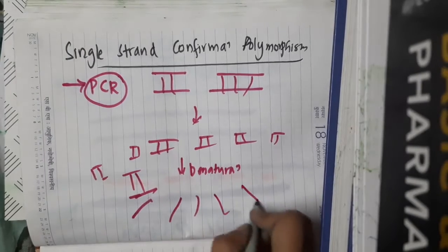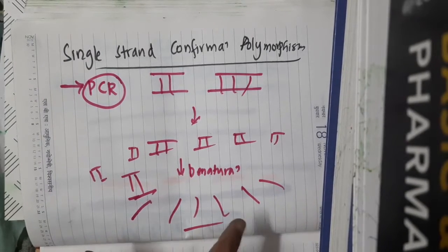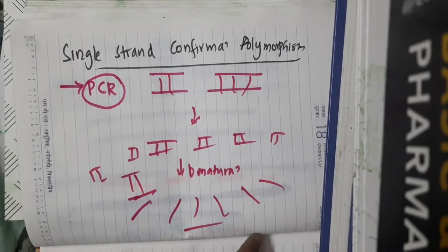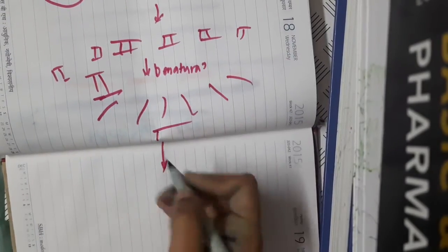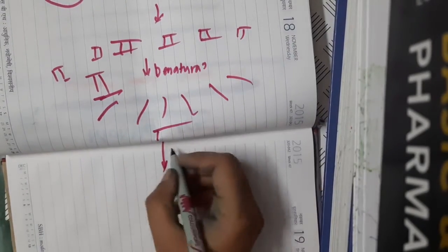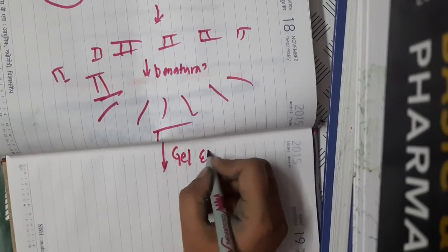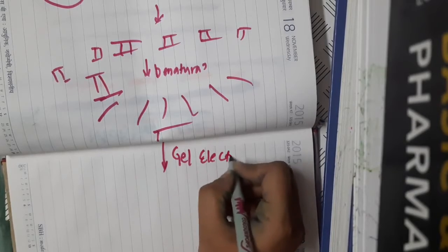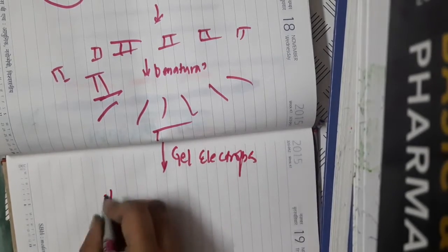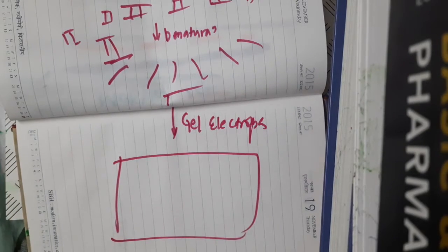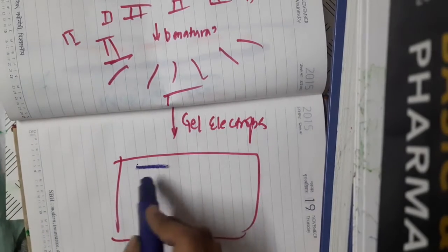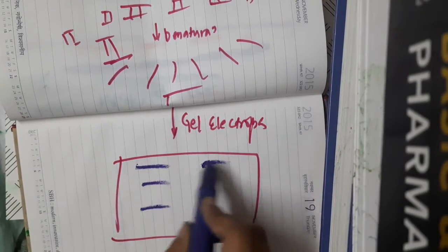With the help of denaturation, we are getting this single strand of DNA. Now this single strand of DNA is taken to gel electrophoresis, where you can see that the DNA will arrange in gel electrophoresis properly.